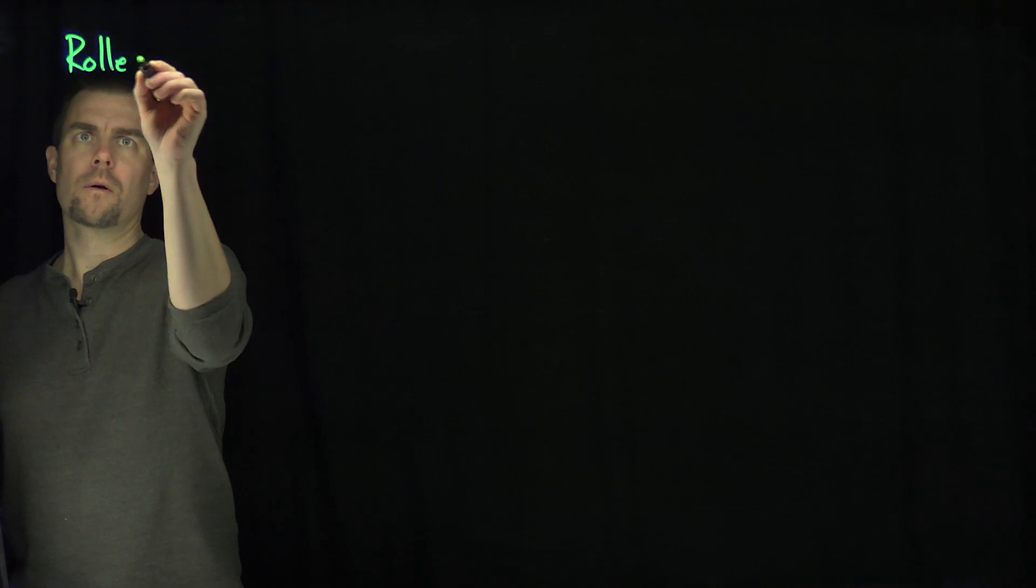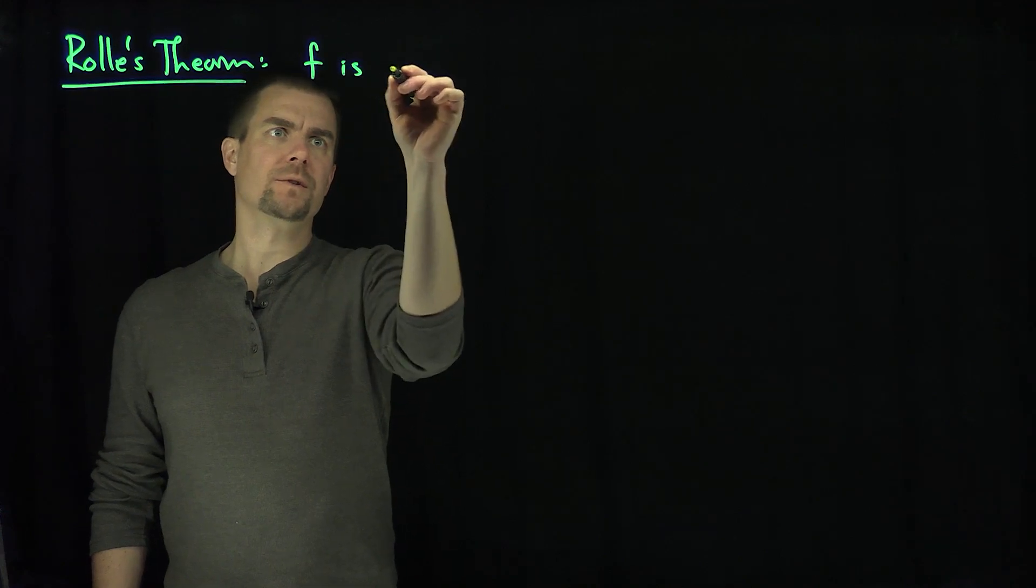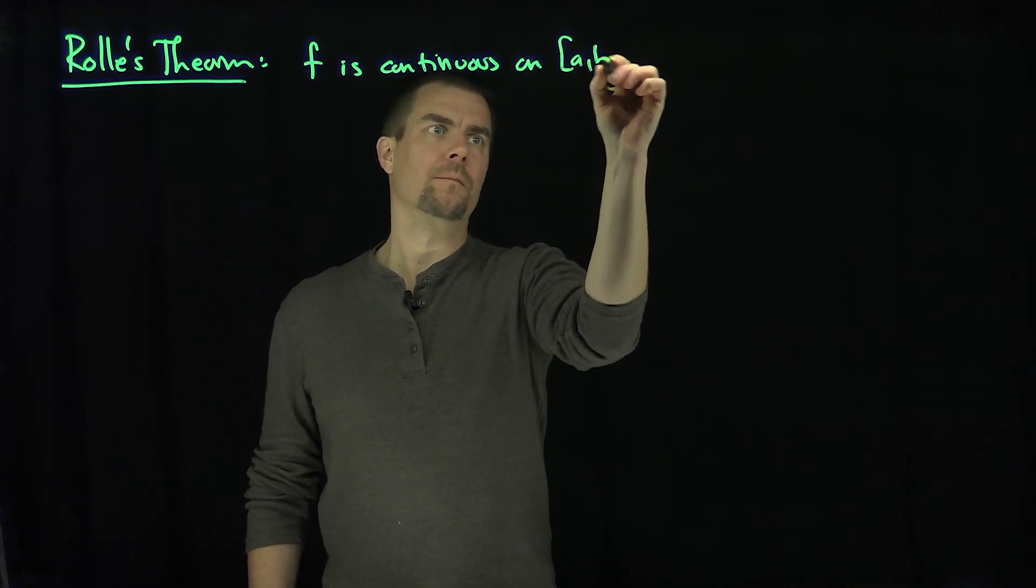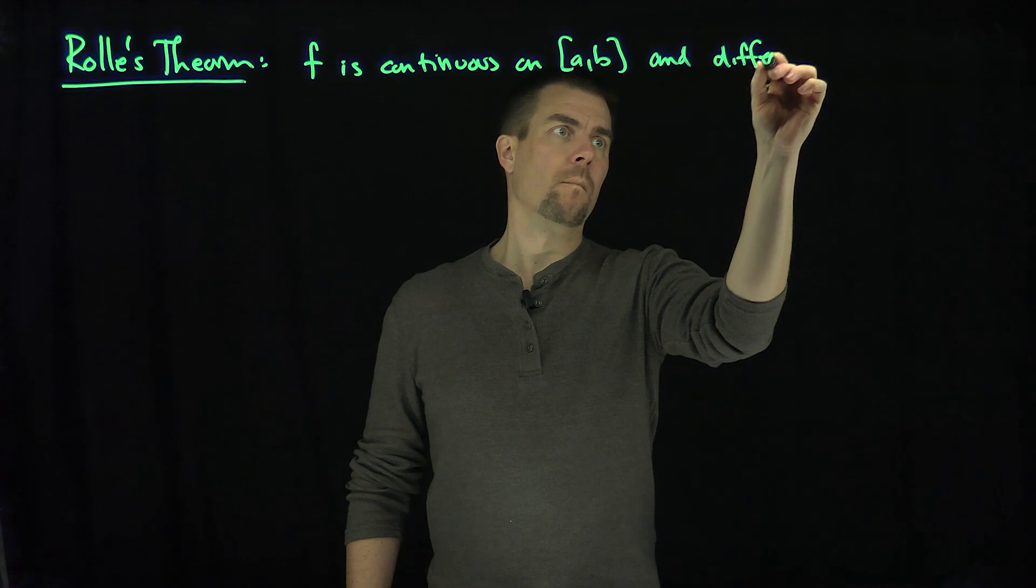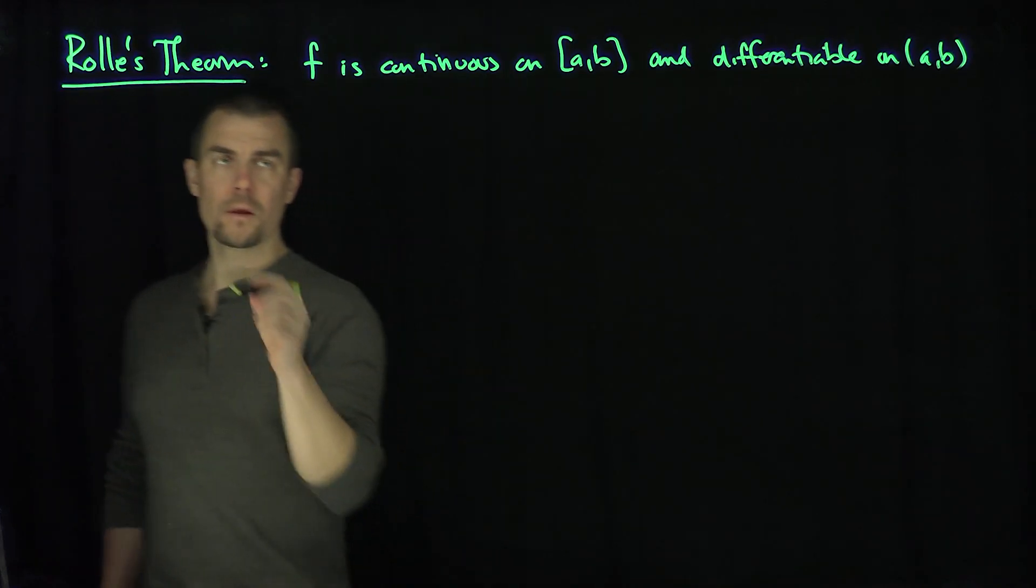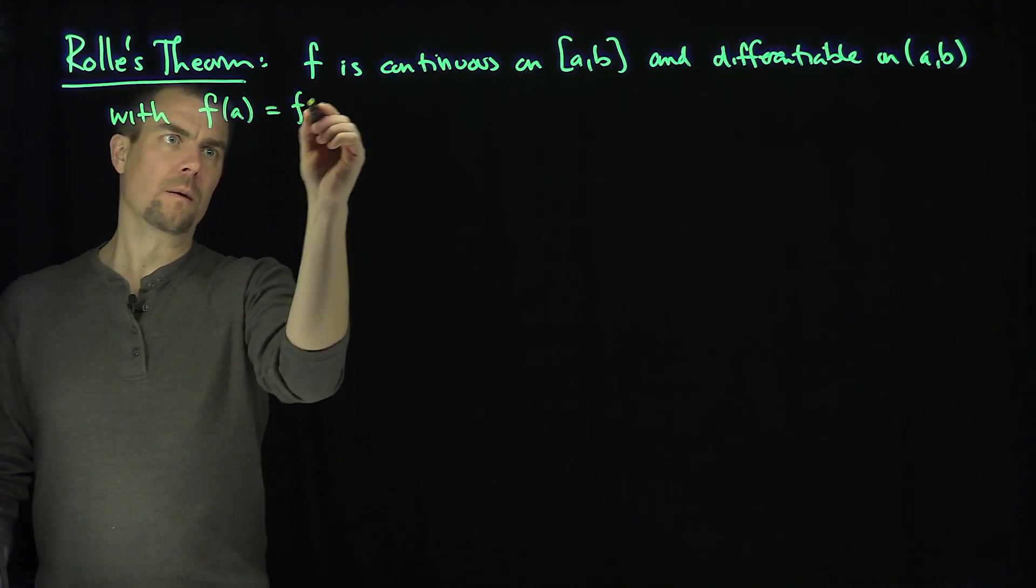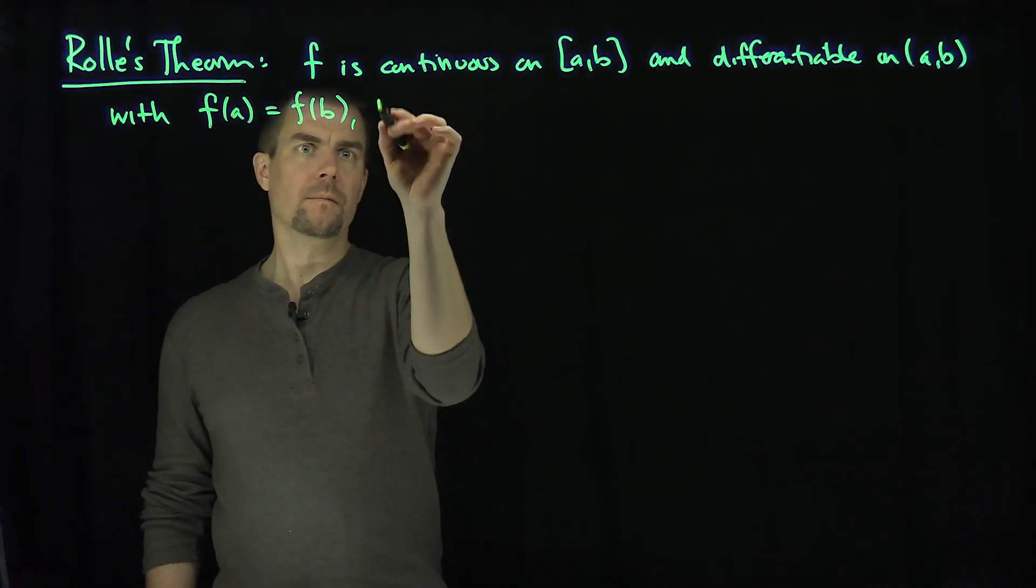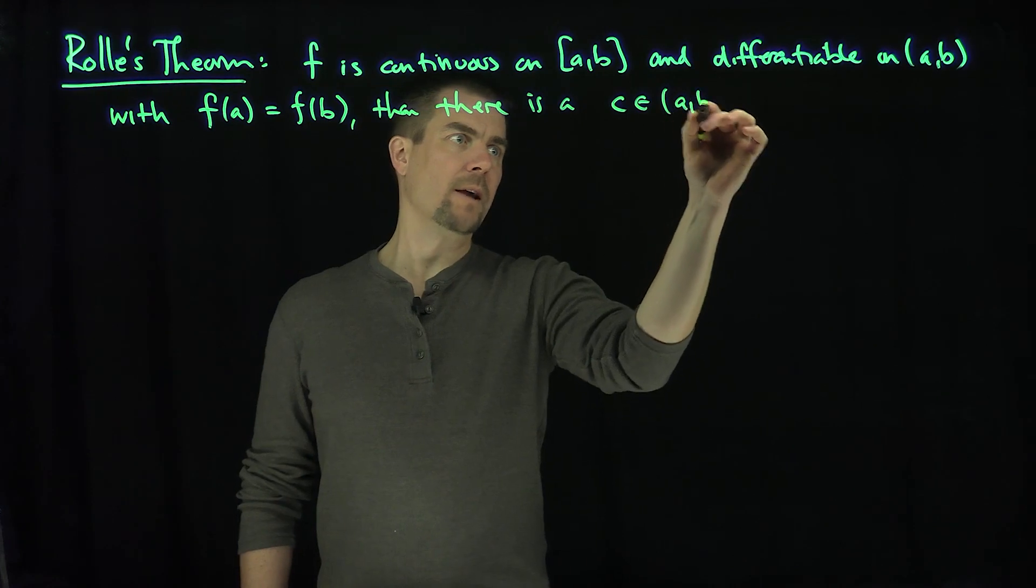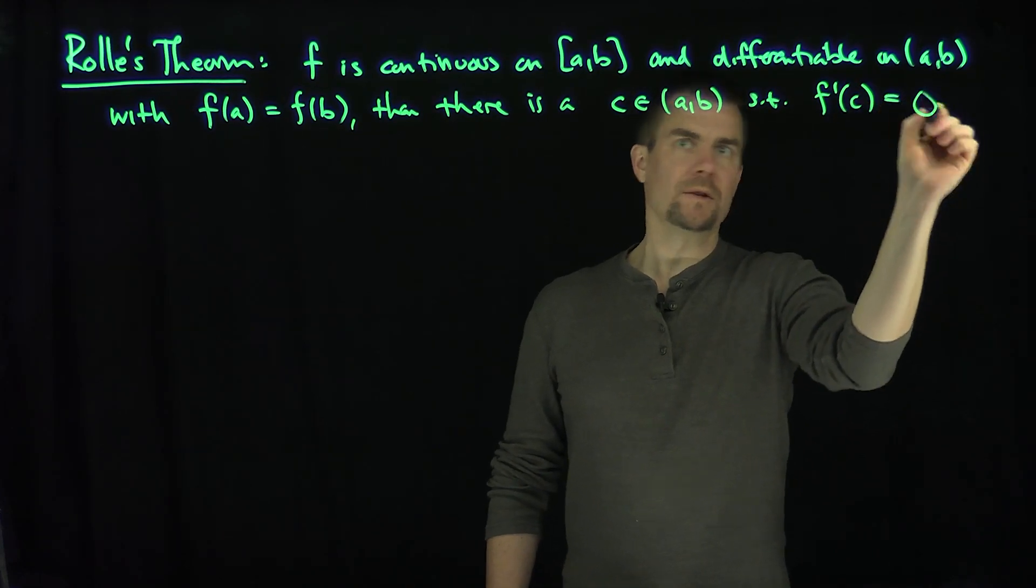So Rolle's Theorem states the following: if f is continuous on a closed interval [a,b] and differentiable on the open interval (a,b) with f(a) being equal to f(b), then there is a point c in the interval a to b such that f'(c) is equal to zero.